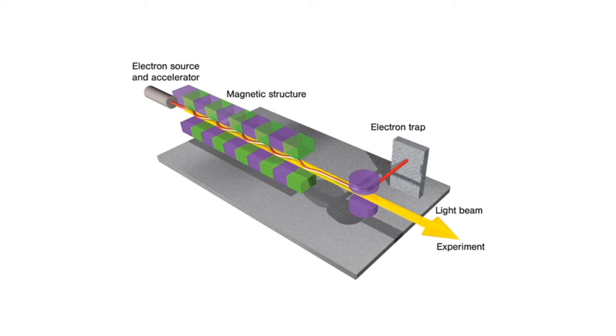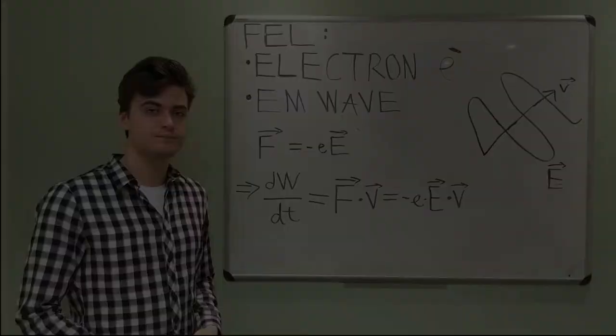Unlike in synchrotrons, in free electron lasers, electrons are linearly accelerated and periodically enter undulators, arrays of magnets with alternating poles. Kostas will tell you more about the theory behind free electron lasers.